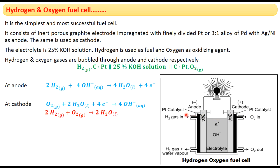Hydrogen gas is passed through the inlet at the anode, and unreactive hydrogen gas along with product water vapor will come out through the outlet. At the cathode, there is an inlet for oxygen and an outlet for unreactive oxygen.